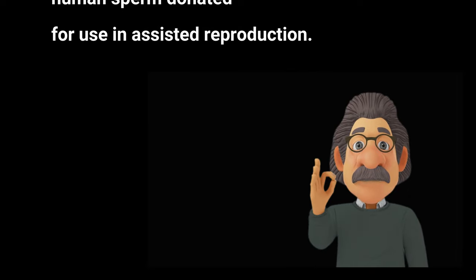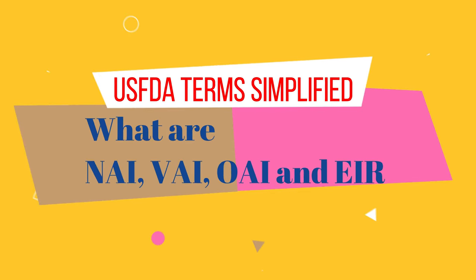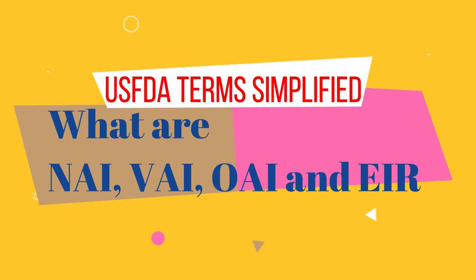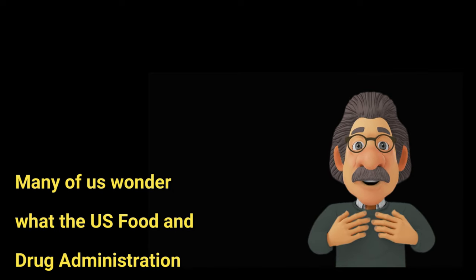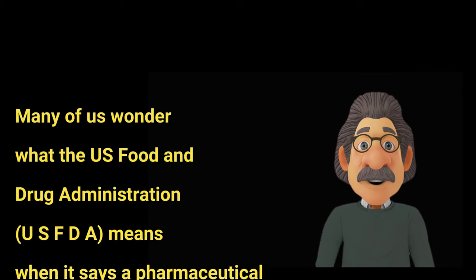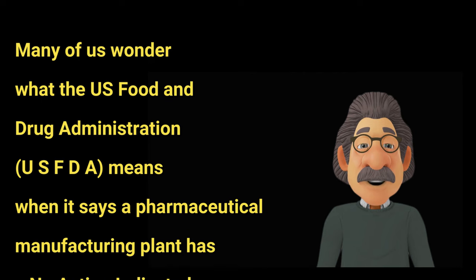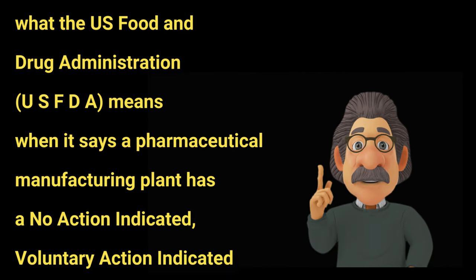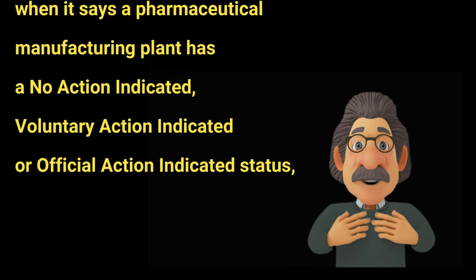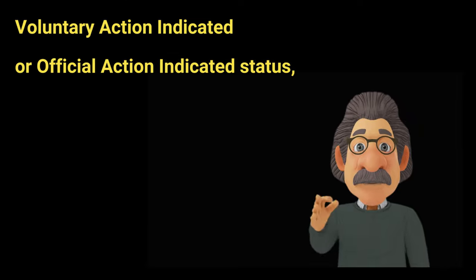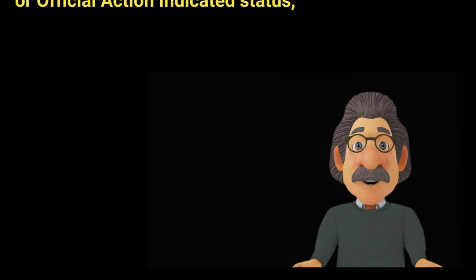Now let's talk about U.S. FDA Terms Simplified. What are NAI, VAI, OAI, and EIR? Many of us wonder what the U.S. Food and Drug Administration means when it says a pharmaceutical manufacturing plant has a No Action Indicated, Voluntary Action Indicated, or Official Action Indicated status.